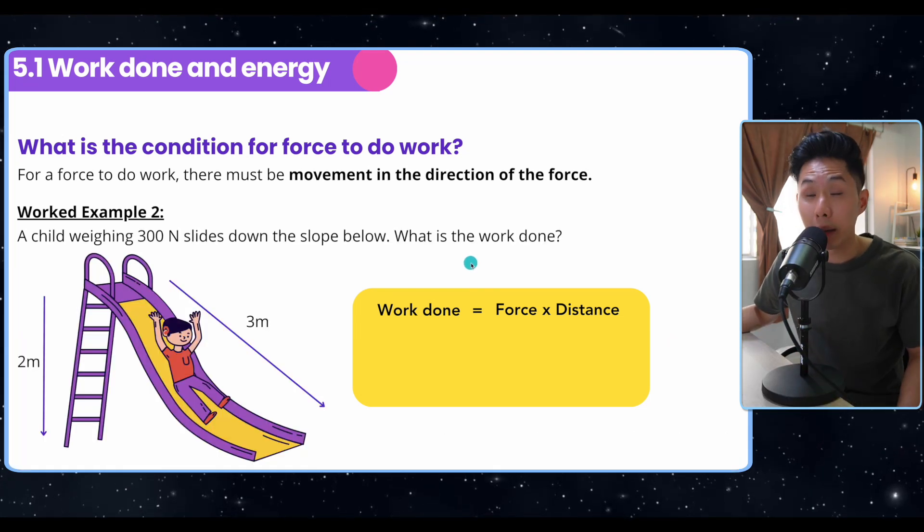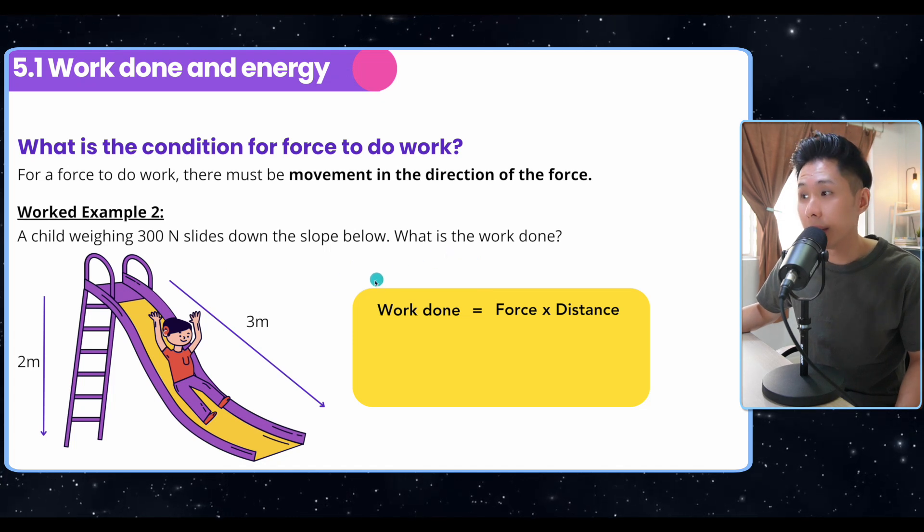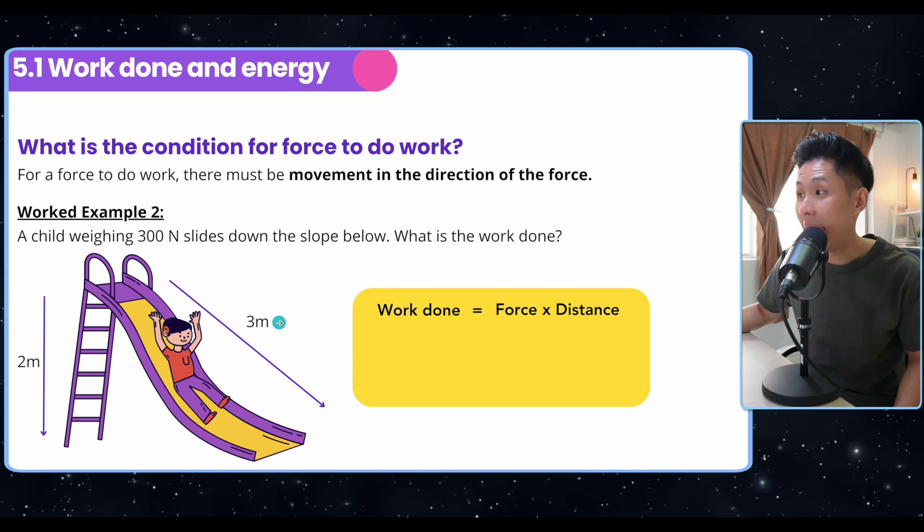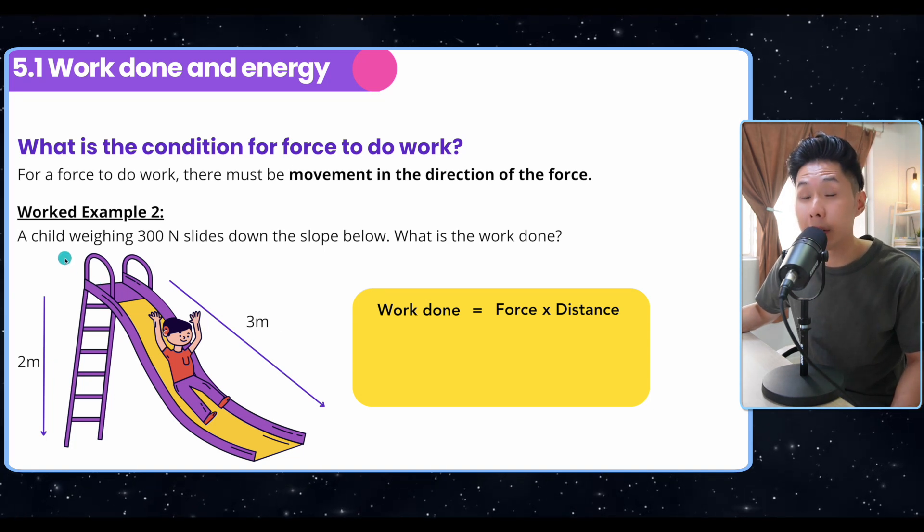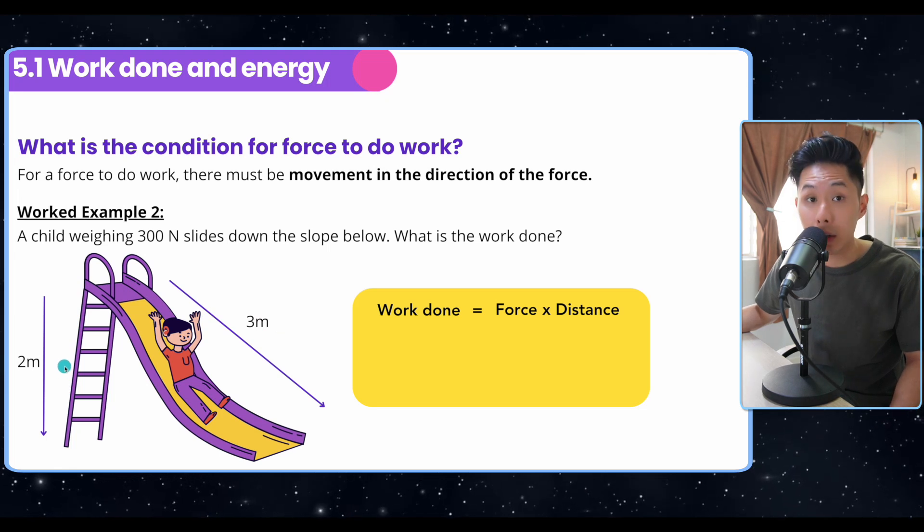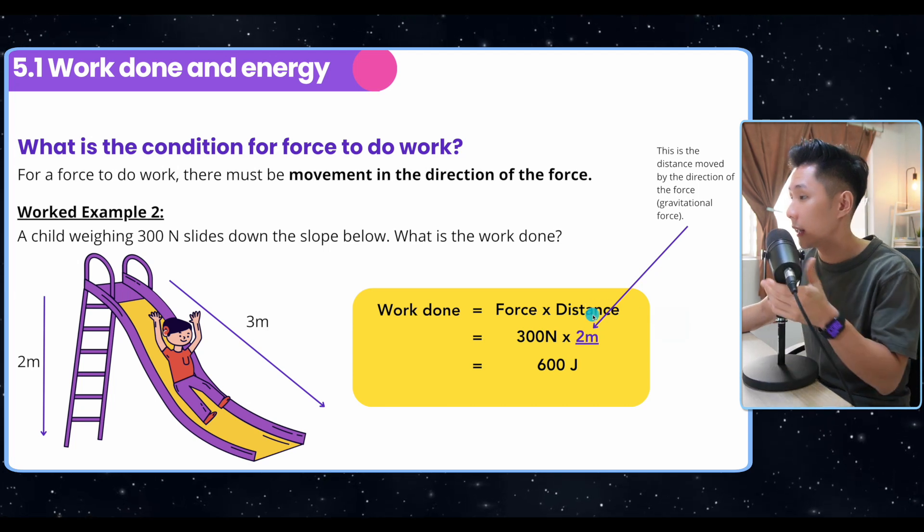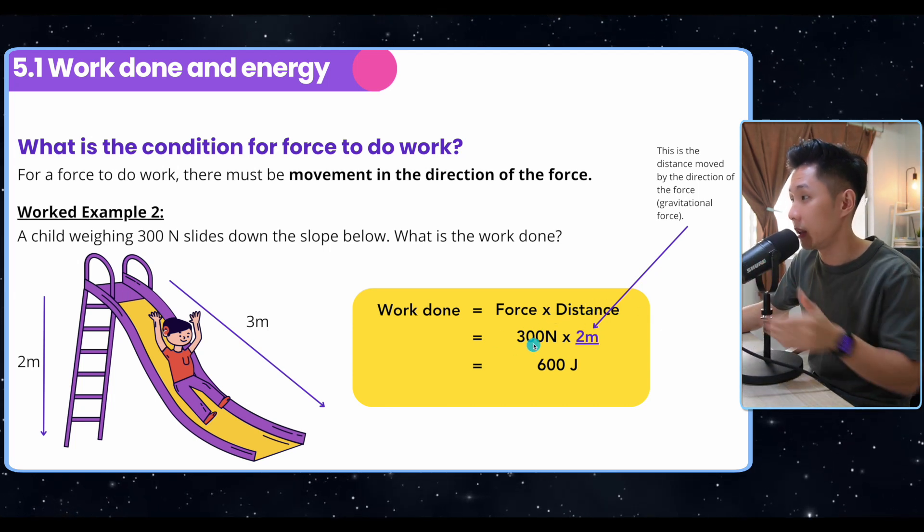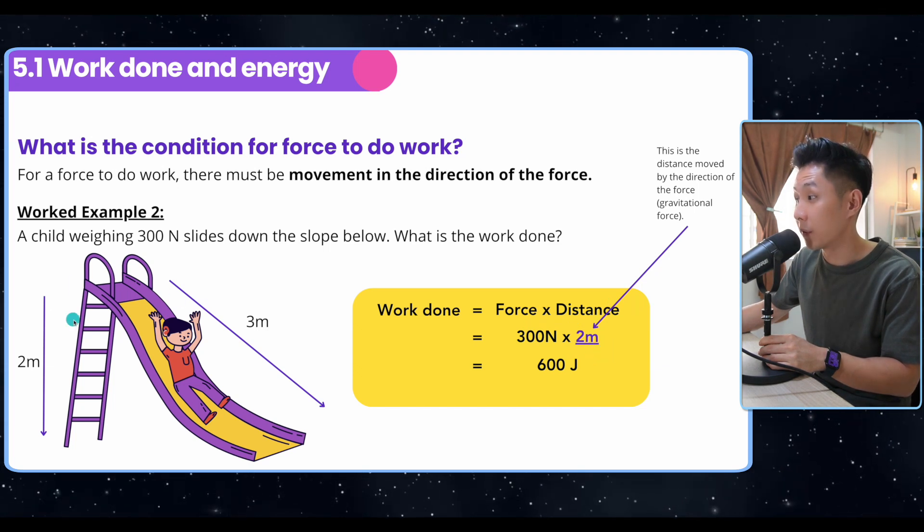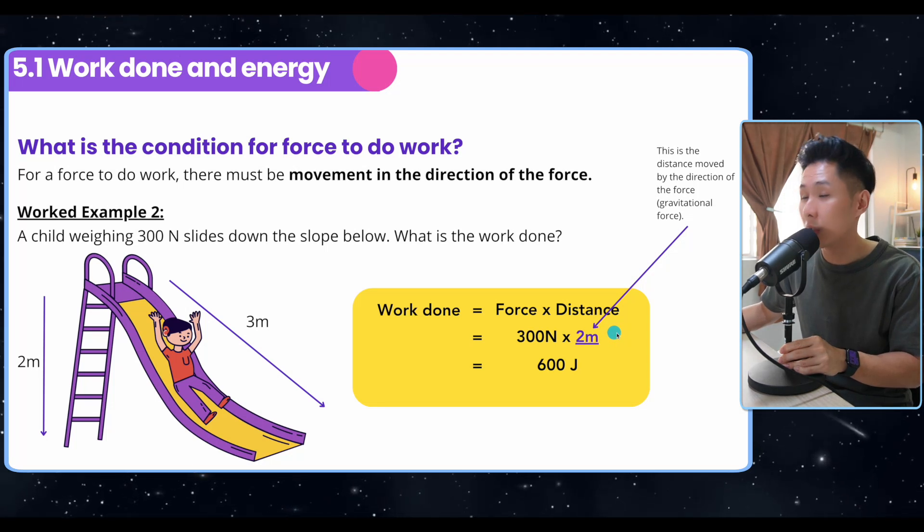Now let's look at example two. A child weighing 300 Newton slides down the slope below. What is the work done? So we have two distances to choose from: either we use three meter or two meter. And the correct answer is that we should use two meter because that's the direction of gravitational force, which is the force that's causing the girl to slide down. So this is why when I'm calculating my work done, I'll use 300 Newton multiplied by two meter here, which is the vertical height. So that's something that you have to take note so that you know which distance to use.